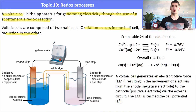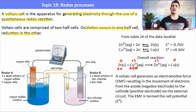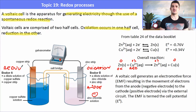We have a voltmeter to measure the E° value or voltage produced by the cell. The overall reaction is: Zn(s) + Cu²⁺ → Zn²⁺ + Cu(s). Using oxidation number rules, zinc has undergone oxidation and copper has undergone reduction. Since oxidation occurs at the anode, the zinc half cell is the anode with a negative charge, and the copper half cell is the cathode with a positive charge.